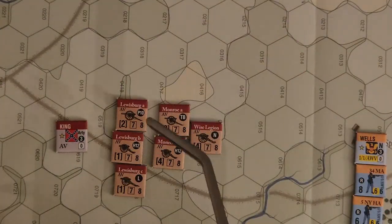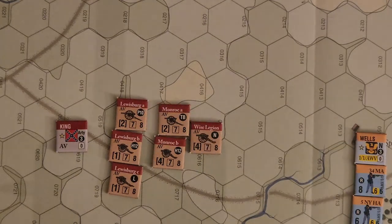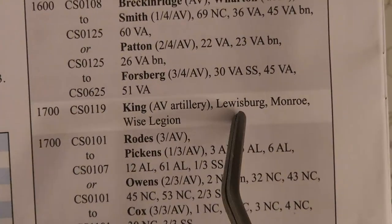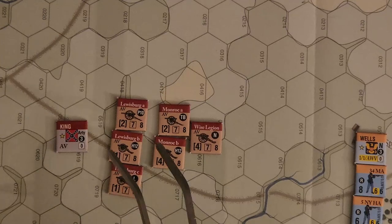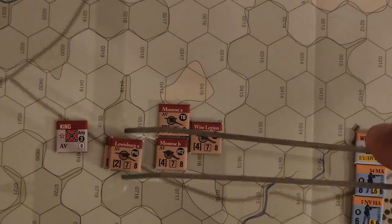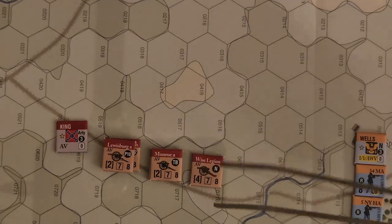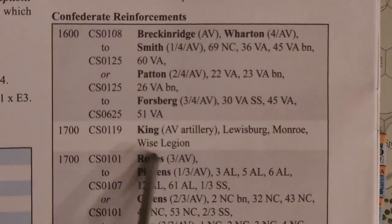It's one unit, but it gets broken down so the artillery piece modifiers can be seen more clearly. When the setup instructions say King's AV Artillery — Lewisburg, Monroe, and Wise Legion — it's saying every section in those batteries goes in that hex. When it says Lewisburg, all three sections in that battery go together in a stack. Both sections in the Monroe battery go together, and Wise Legion only has one battery — I think it's 12-pound Napoleons.